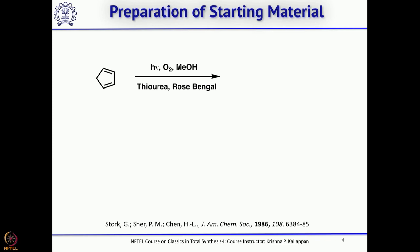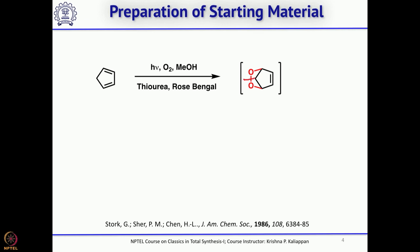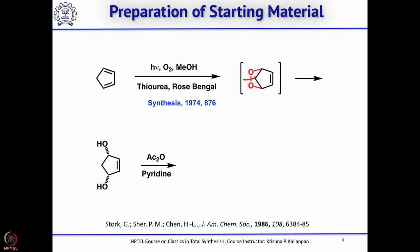Take cyclopentadiene and do a 4+2 cycloaddition with oxygen — this is a known transformation. Photochemical conditions are required because oxygen is normally in the triplet state, so it has to come to the ground state. Using thiourea, the O–O bond is cleaved under the same conditions to give the corresponding diol. This is a meso compound, and to resolve it, you first protect the diol as the diacetate.